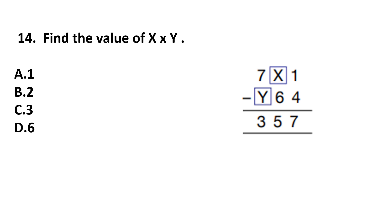Question number 14. Find the value of X multiplied by Y. This is a subtraction question. First, 1 minus 4 is not possible, so this becomes 11. We borrow 1 from X, and 11 minus 4 is 7. Now, to find X: 6 plus 5 is 11, and since we borrowed 1 from X, X is 2. The value of X is 2.